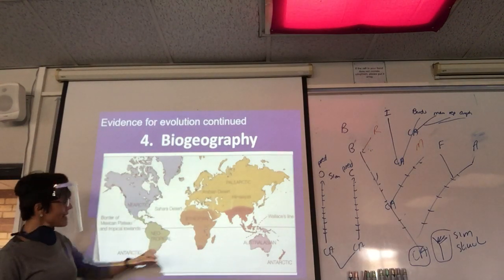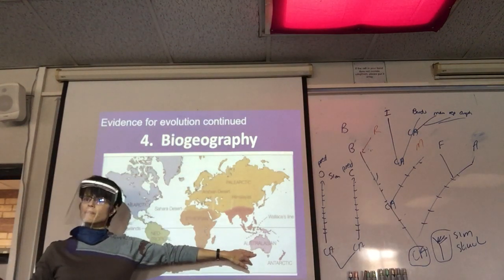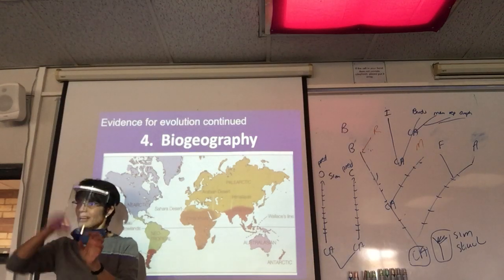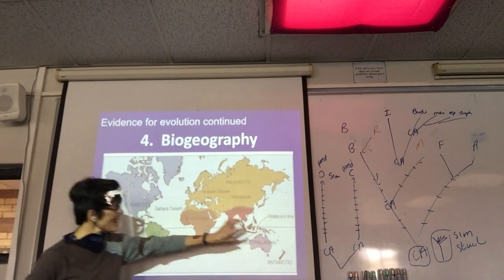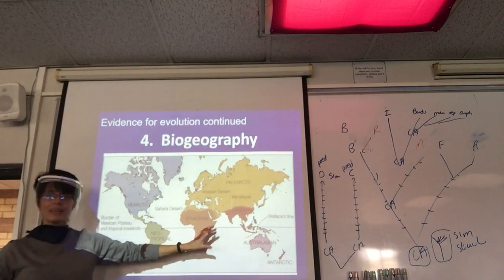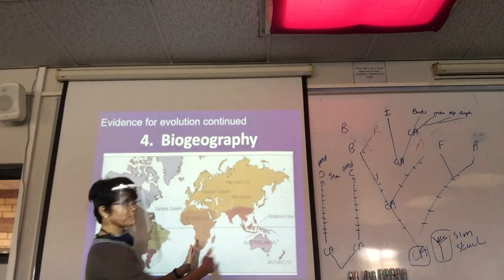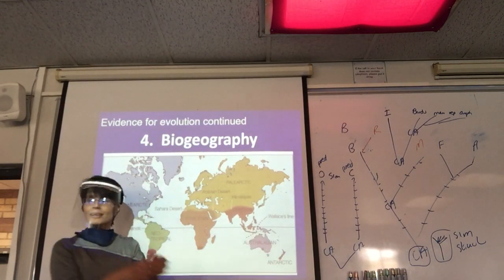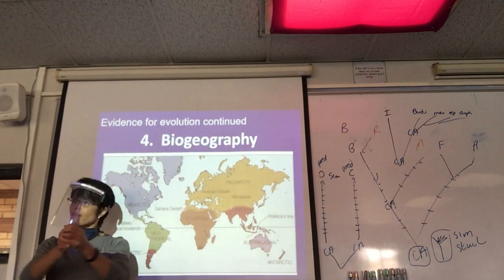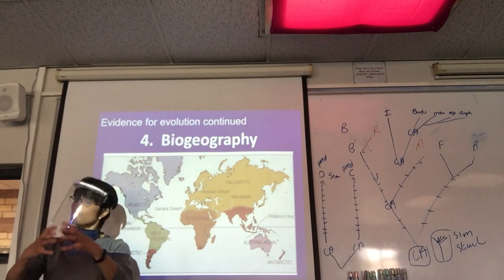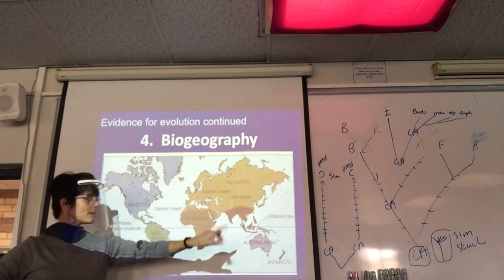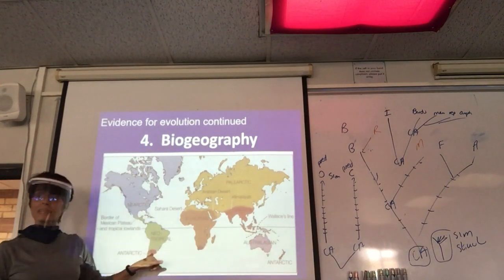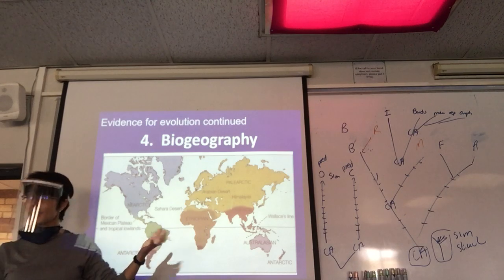So in Australia you find, I don't know if you know the bottle brush plant, it's got like little red spiky flowers, looks like a bottle brush. You find them in Australia and you find them in South Africa even. With other evidence, when it was still Pangaea, that plant evolved on that supercontinent and then when the continents separated, they now have very similar species in both Australia, Africa and even South America.